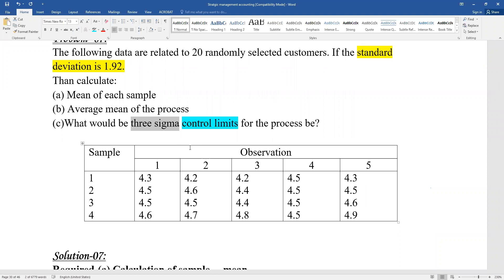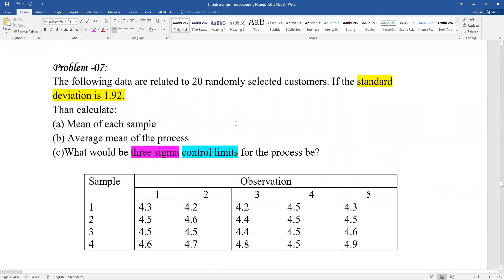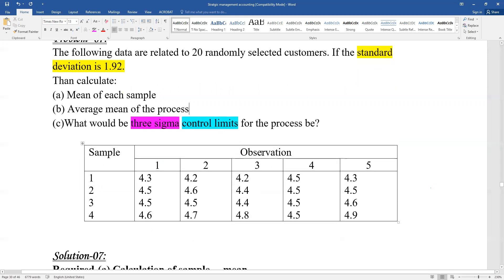The control limits - three sigma. The problem gives 20 randomly selected customer information with standard deviation. The observations are shown in the table, with samples and observations.